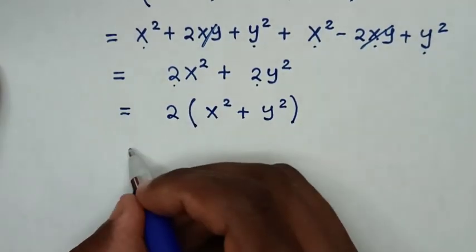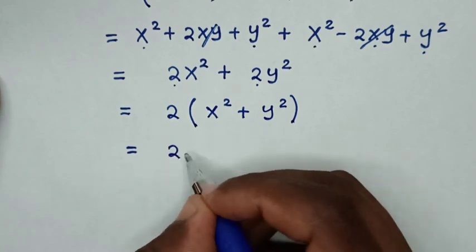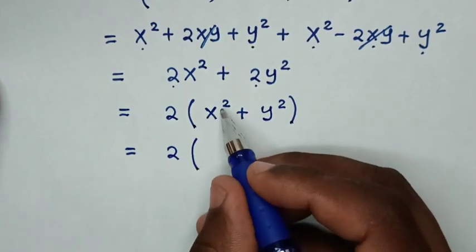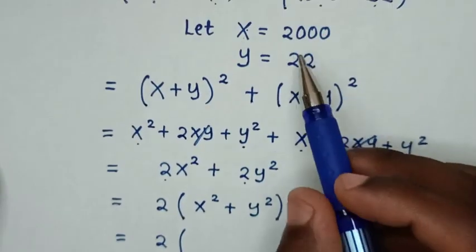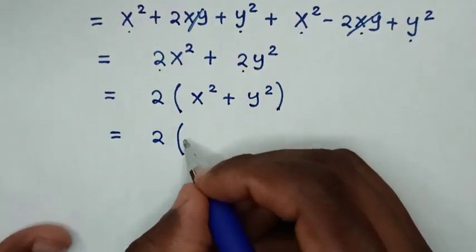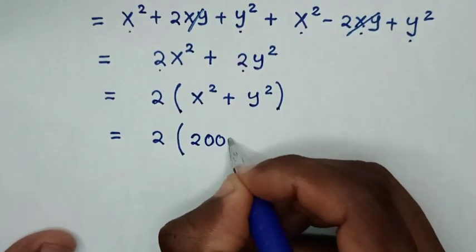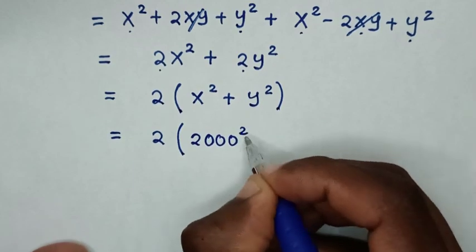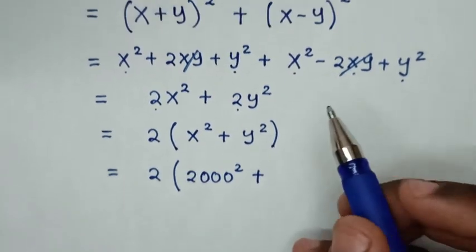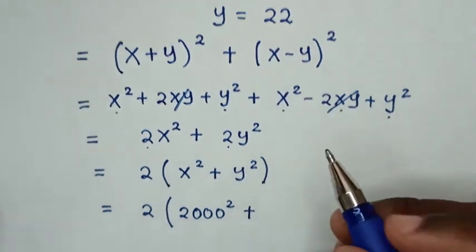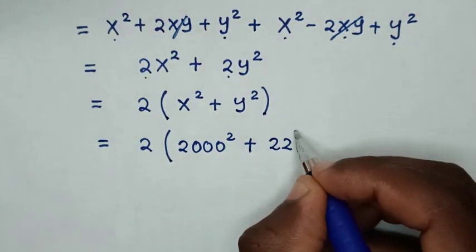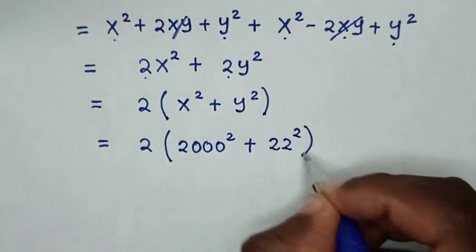Then, in the next step, substituting back: x is 2000 and y is 22, so it will be 2(2000 squared + 22 squared).